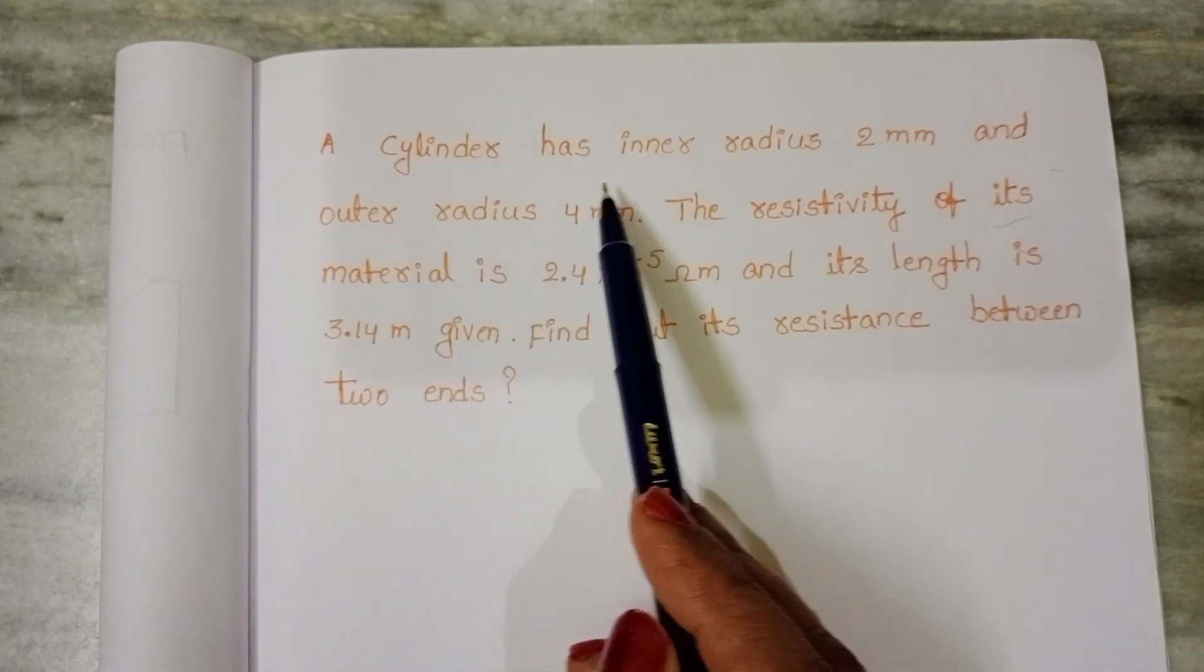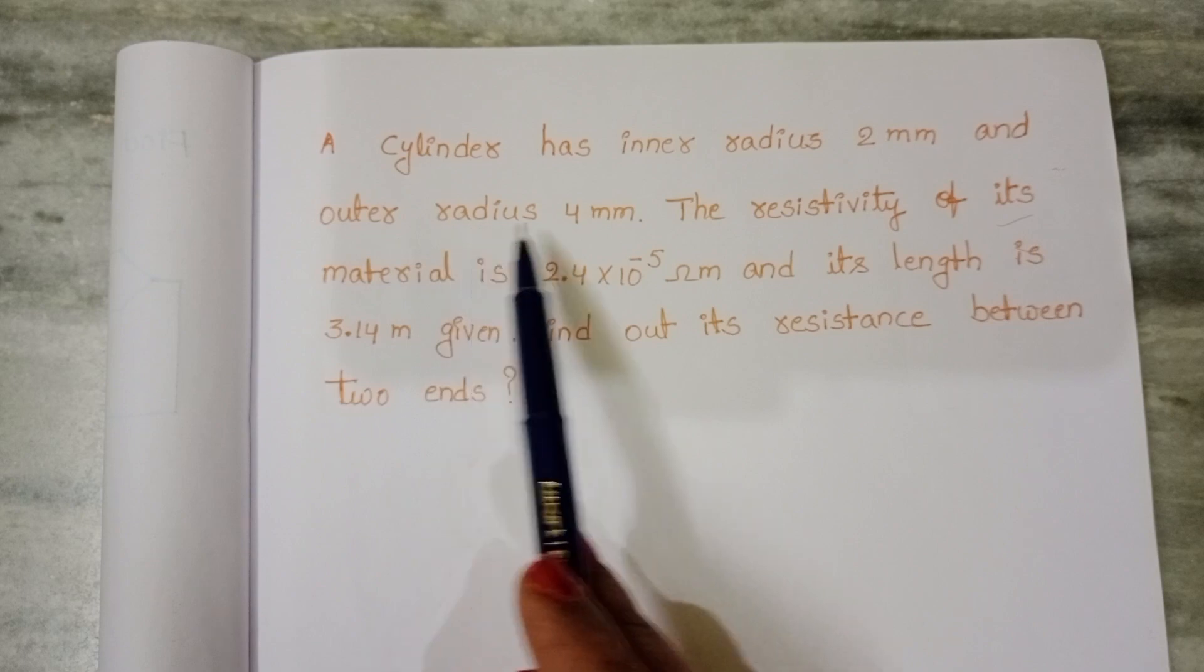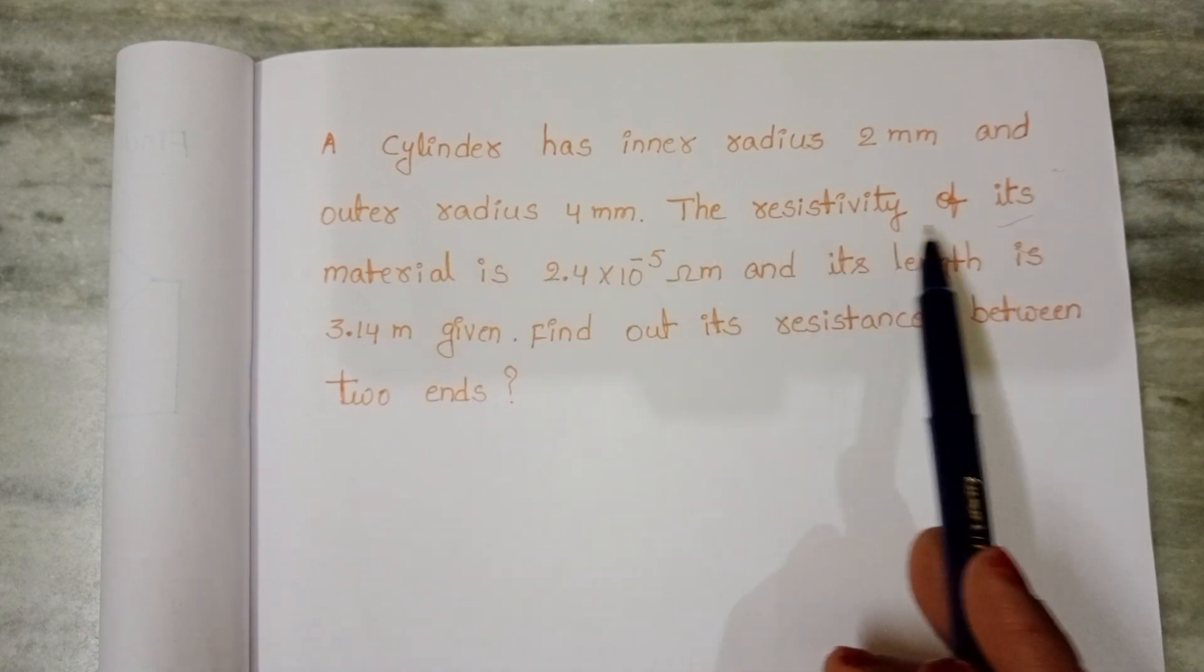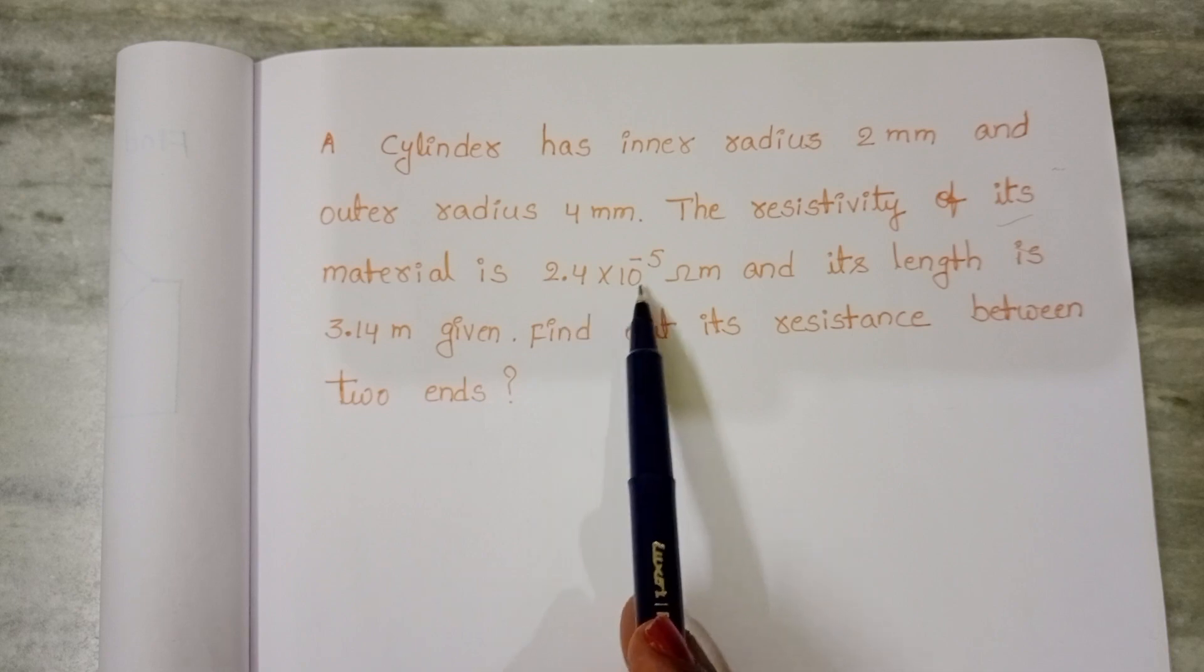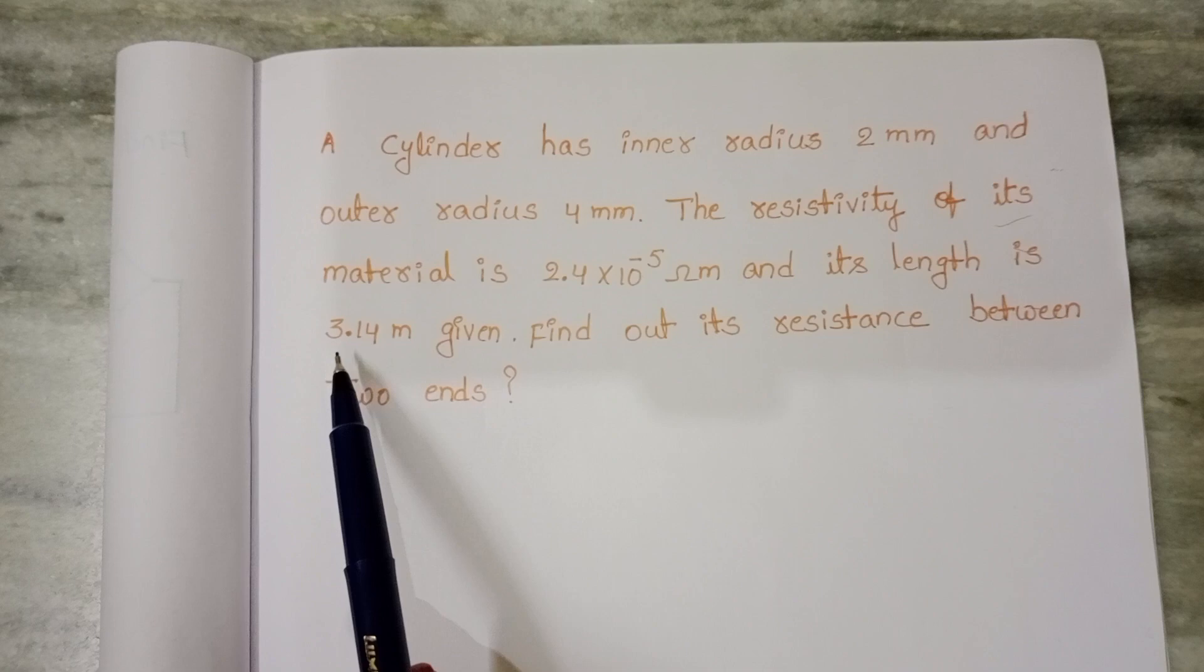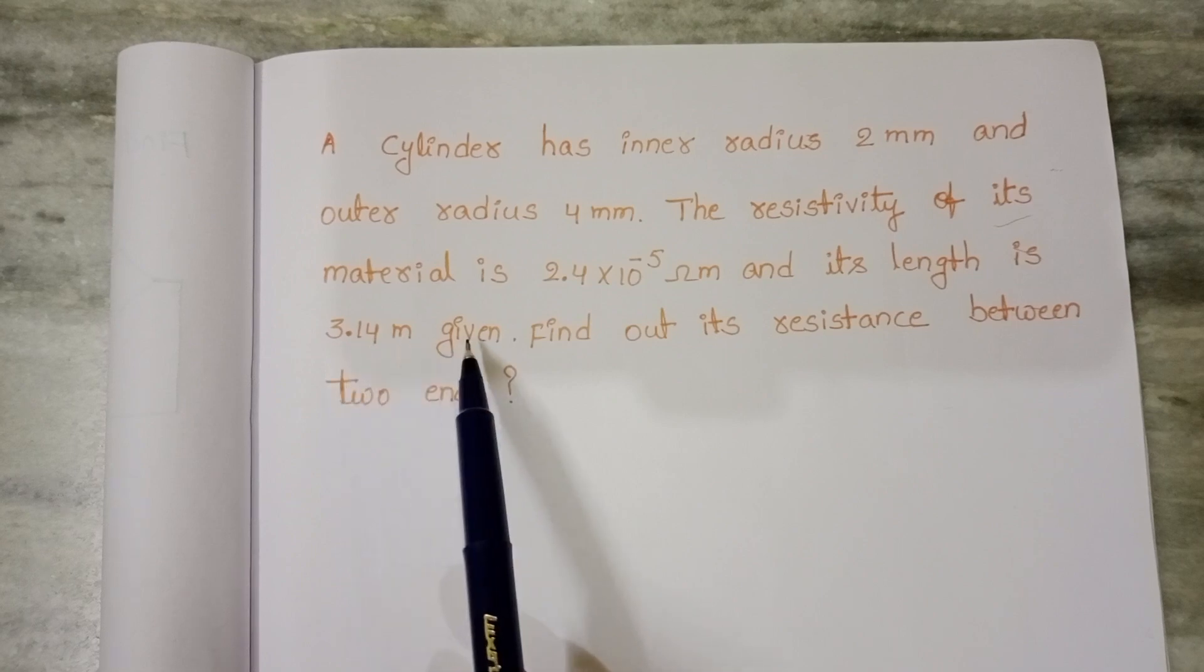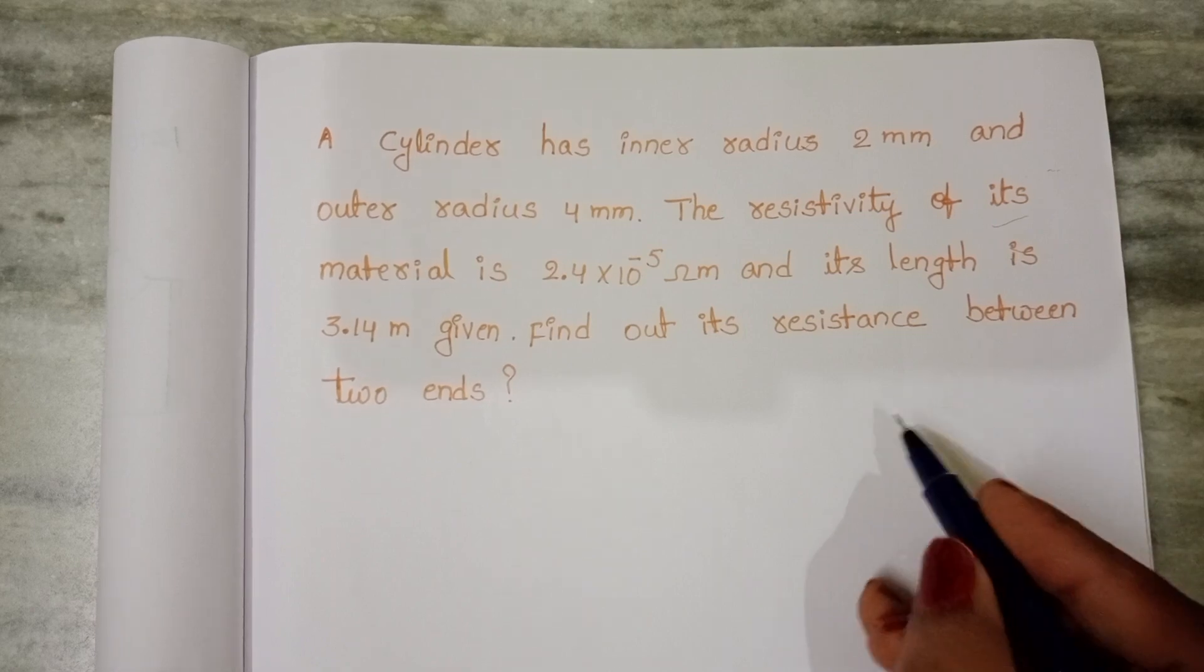A cylinder has inner radius 2 mm and outer radius 4 mm. The resistivity of its material is 2.4 × 10⁻⁵ ohm meter and its length is 3.14 meter given. Find out its resistance between two ends.